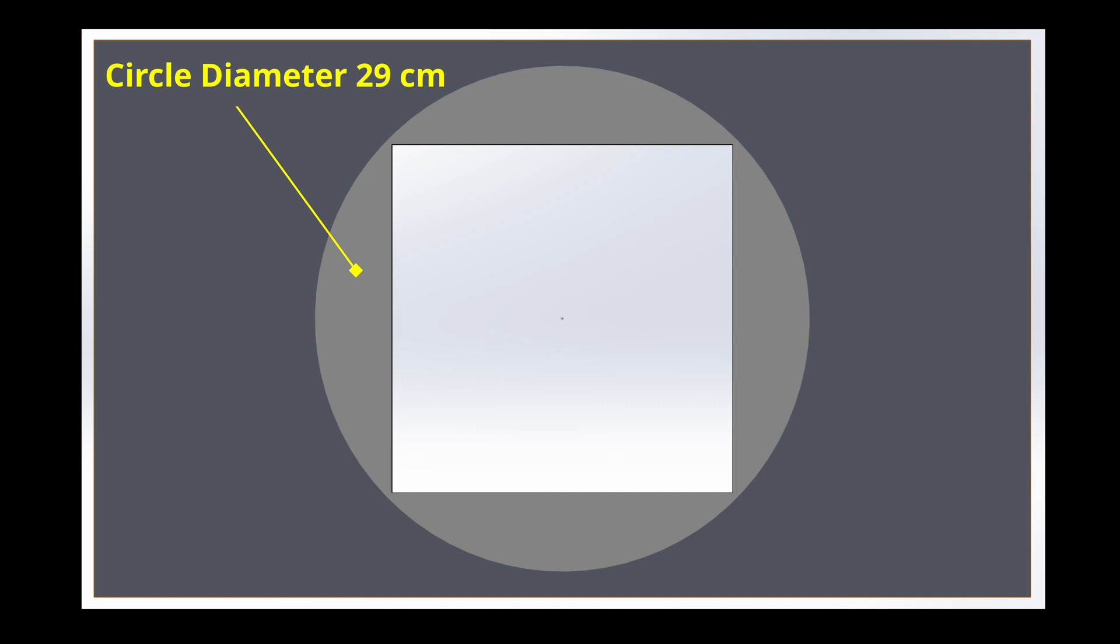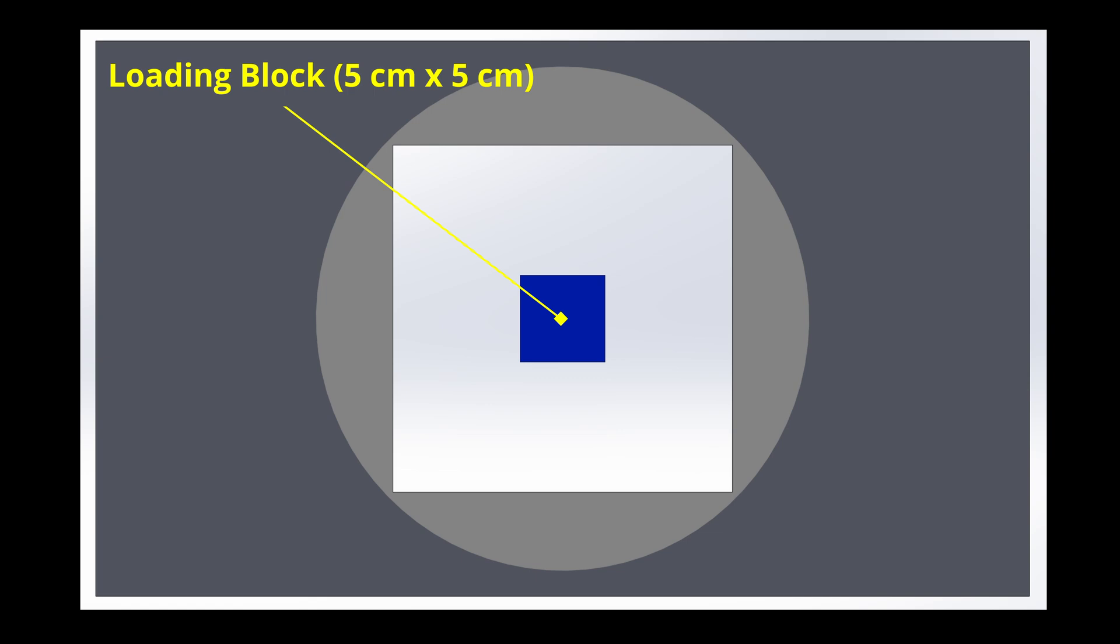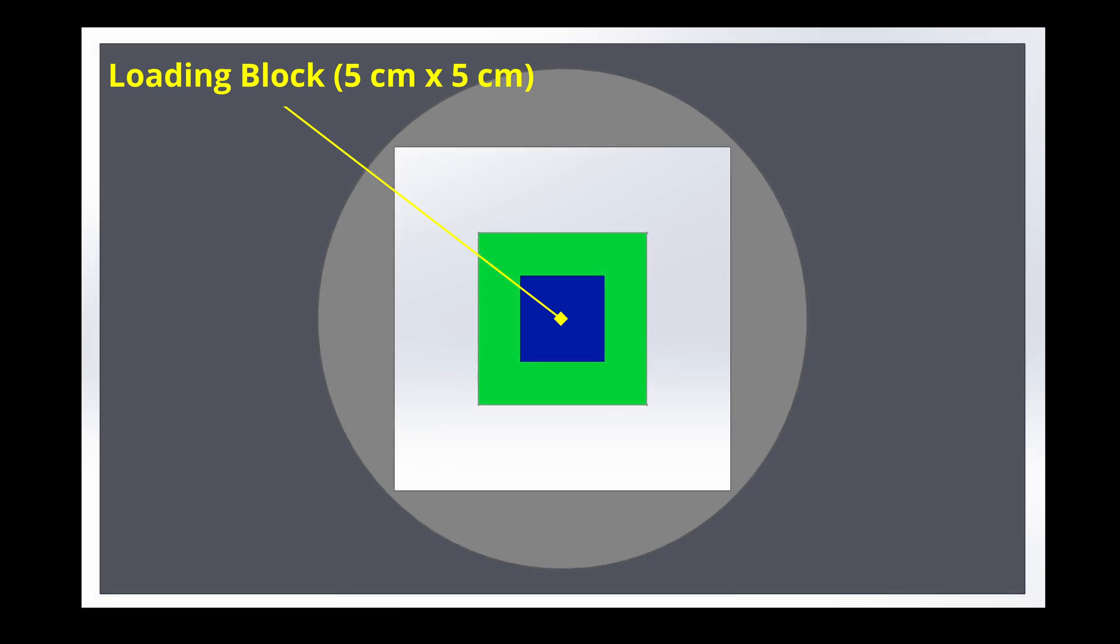Here is the CAD drawing with the 29 centimeter circle. The next general specification usually involves specifying where the 5 by 5 centimeter loading block must be. It is typically stated that it must be in the center of the 20 by 20 centimeter square within a tolerance of 2.5 centimeters in any direction.